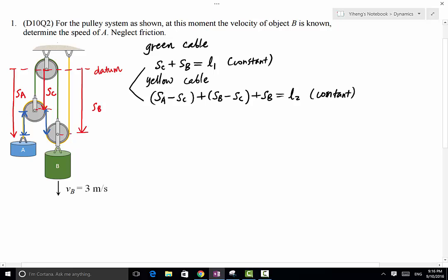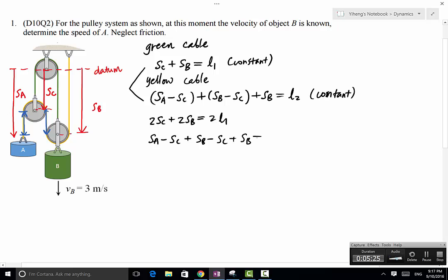We need to find the direct relation between SA and SB. To do that, we need to cancel out SC. So the first equation, if we multiply it by 2, we get 2SC plus 2SB equals to 2L1. The second equation is SA minus SC plus SB minus SC plus SB equals to L2. Therefore, if we add these two equations together, then the 2SC and the 2 negative SC cancel each other out. As a result, we get SA plus 4SB equals to some L.